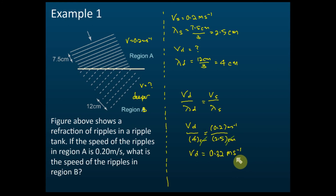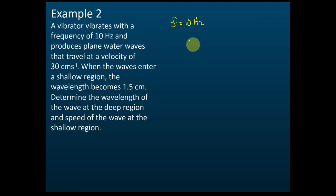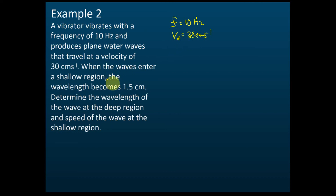Example 2: A vibrator vibrates at a frequency of 10 Hz and produces plain water waves that travel at a velocity of 30 cm/s. Let's list the information. Frequency f equals 10 Hz, and velocity v equals 30 cm/s.